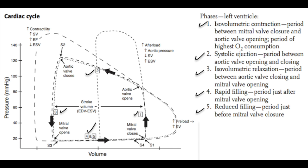Next, we'll discuss the cardiac cycle. The cardiac cycle can be shown as a pressure-volume loop, with pressure on the y-axis and volume on the x-axis. Moving left to right increases volume; moving down to up increases pressure. There are different phases of the left ventricular cardiac cycle. Phase one is seen at the right side of the graph and goes from mitral valve closure to aortic valve opening. This phase is called isovolumetric contraction, because the volume remains approximately the same. It is a very short phase and is the beginning of systole.